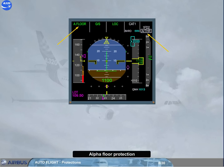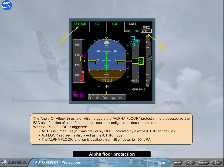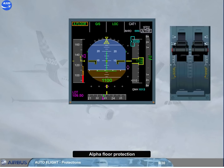The alpha-floor function is available from lift-off down to 100 feet radio altimeter. Note: the alpha-floor protection is lost in case of combinations of failures, or if at least one thrust lever instinctive disconnect push button is pressed for more than 15 seconds. The alpha-floor protection is also lost in case of engine out when slats and flaps are extended, or in alternate law or indirect law.